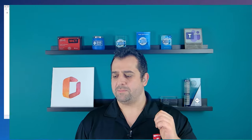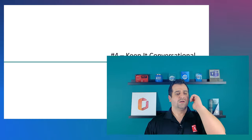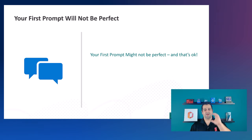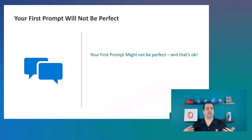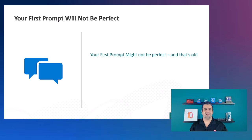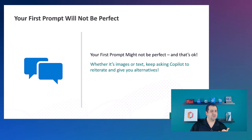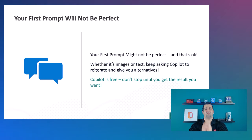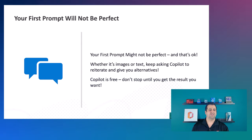That's it for tip number three. Now let's talk about tip number four: keep it conversational. Copilot will not get things right on the first try — either because Copilot doesn't get it right or your prompt wasn't exactly what you wanted. So whether it's images or text, keep asking Copilot to reiterate and give you alternatives. Copilot is free — it doesn't cost you anything to keep talking with it, so don't stop until you get the results you want.